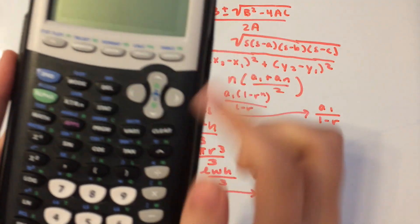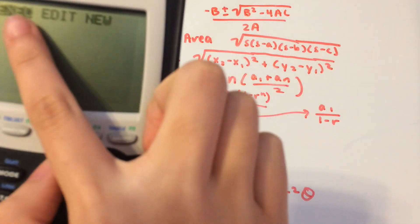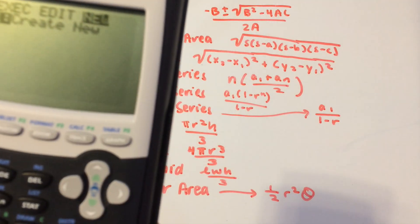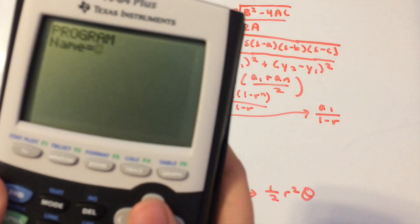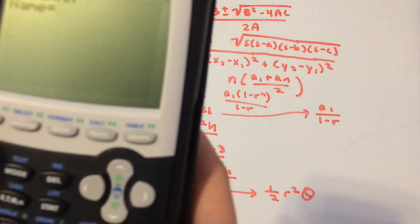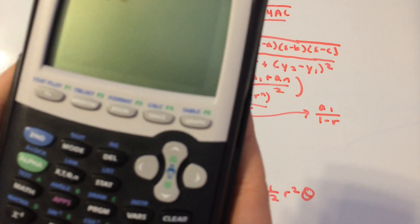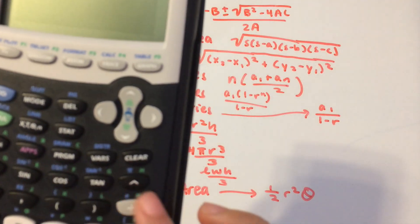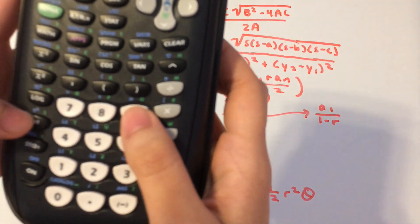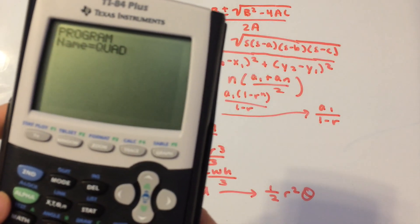Go to where it says PRGM, hit that, and then you'll see Execute, Edit, and New. Move over to New and press Enter, and then we're going to call this one QUAD for quadratic. Hit Second then Alpha to alpha-lock the keyboard, then type Q, U, A, D. Now it says QUAD.